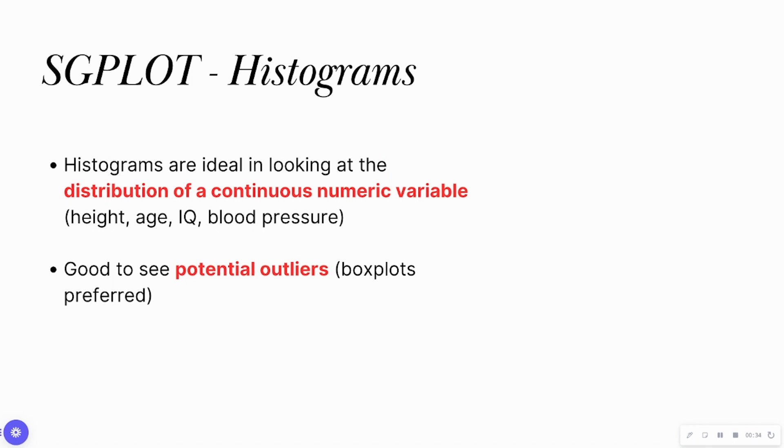So when would you actually want to use a histogram? Histograms are ideal when you are trying to find the distribution of a continuous numeric variable. This could be something as height, age, IQ, blood pressure, anything that is continuous and numeric in nature. Histograms are also great if you want to see potential outliers. I prefer box plots, but histograms can also do the trick.